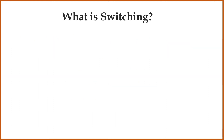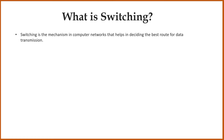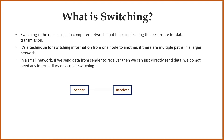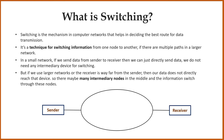So what is switching? Switching is the mechanism in computer networks that helps in deciding the best route for data transmission. It's a technique for switching information from one node to another if there are multiple paths in a larger network. In a small network, if we send data from sender to receiver, we can just directly send data and do not need any intermediary device. But if we use larger networks or the receiver is way far from the sender, our data does not directly reach that device. There are many intermediary nodes in the middle and the information switches through these nodes.